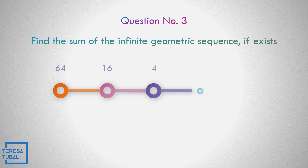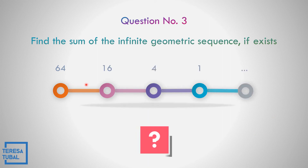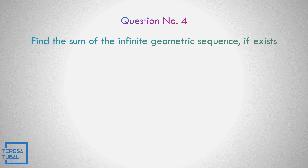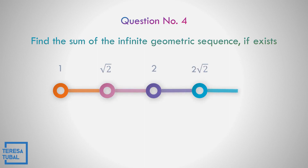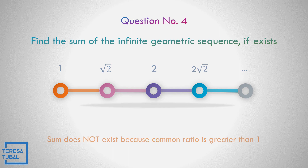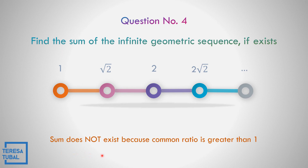How about number 3? Find the sum of the infinite geometric sequence if it exists: 64, 16, 4, and 1. The answer is equal to 256 over 3. The common ratio is equal to 1 fourth — 16 over 64 is equal to 1 fourth — and 1 fourth is greater than negative 1 but less than 1, so the sum exists. Number 4: 1, square root of 2, 2, 2 square root of 2. The sum does not exist because the common ratio is greater than 1. Square root of 2 divided by 1 is square root of 2, and square root of 2 is greater than 1.